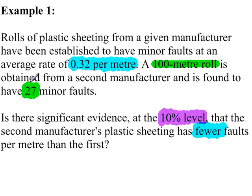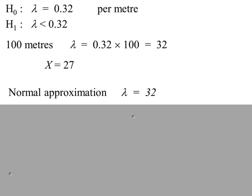Now the evidence given here is 27 faults, but this is for a 100 meter roll. Lambda here is for 1 meter. This value is for 100 meters. So we need to modify the value of lambda. So our new value is 32. This is the value that we're going to use. This is the evidence, 27. A normal approximation applies because lambda is more than 10.